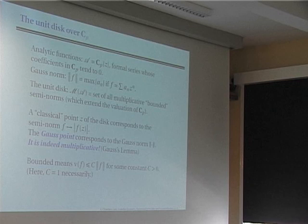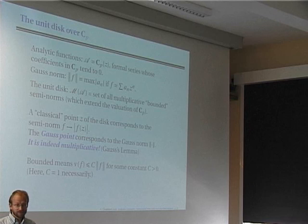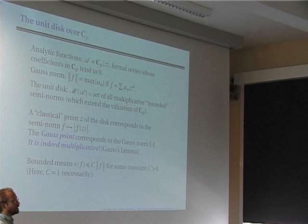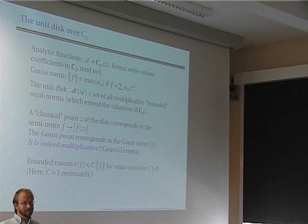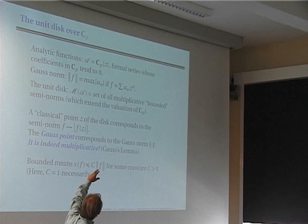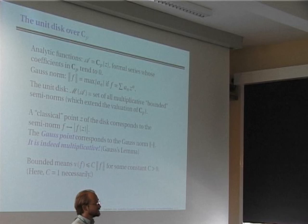I want to describe in more detail the Berkovich unit disk over ℂ_p. In any theory of analytic functions on a disk, an analytic function is a power series converging on the disk. The ring of functions on the disk is the set of formal power series with coefficients in ℂ_p going to zero, i.e., the closed unit disk algebra A. There is an important feature of p-adic analytic spaces (in Tate's or Berkovich's approach): the basic sets you work with are affinoids — they look like compact sets, not like open sets.